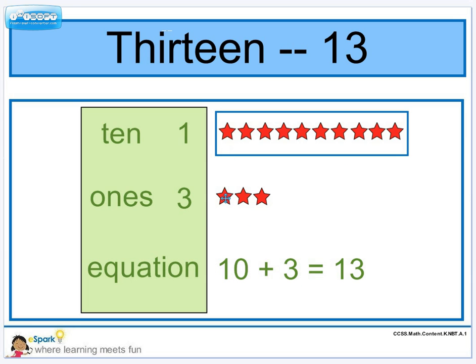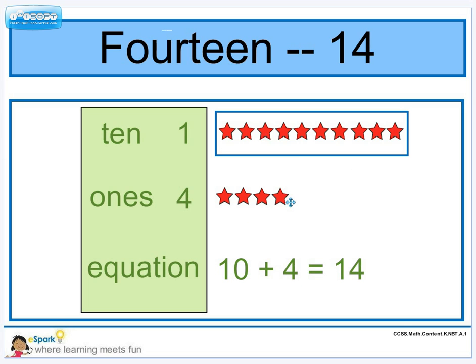So we have one group of 10. We have three 1s, and my equation is 10 plus 3 equals 13. So we add a star for 14, one group of 10, and four 1s. And here's my equation.